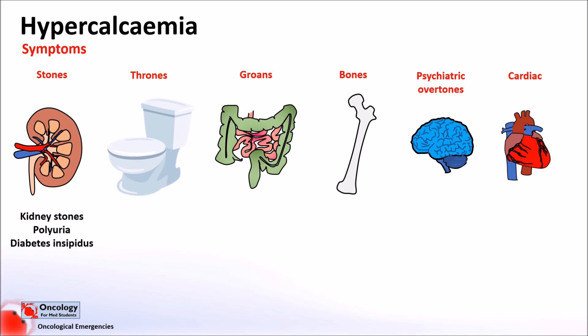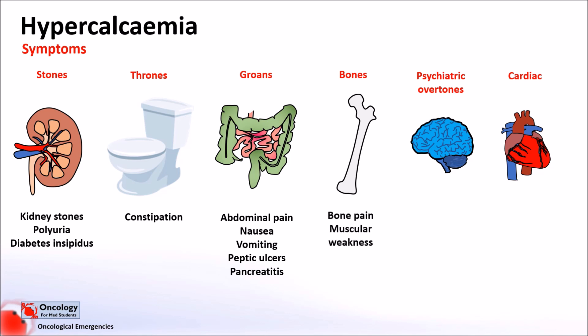Stones refers to the development of kidney stones, which is more common in people with long-term high calcium levels. Another kidney-related symptom is polyuria — passing a lot of urine — because high calcium levels impair the kidney's ability to reabsorb water back into the bloodstream, known as nephrogenic diabetes insipidus. Thrones refers to polyuria as well as constipation, which also commonly occurs. Groans refers to abdominal symptoms: anorexia, nausea and vomiting are common gastrointestinal effects. Hypercalcaemia can also lead to peptic ulcers and pancreatitis. Bone pain is very common, especially in those with bone metastases, and muscular weakness is also frequently noted. Psychiatric overtones include anxiety, depression and cognitive dysfunction — confusion and problems concentrating — which tend to improve with treatment.